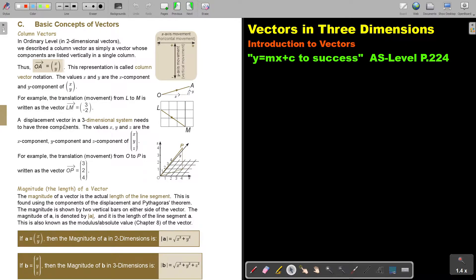A displacement vector in a three-dimensional system needs to have three components. So in a three-dimensional system, it needs to have three components. The values x, y, and z are the x component, y component, and z component of (x, y, z). So it's just having an extra one.